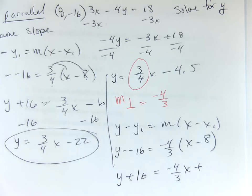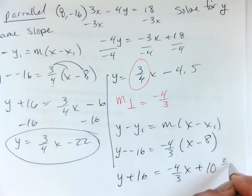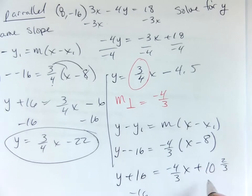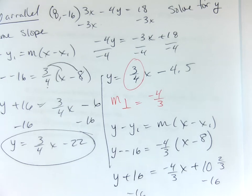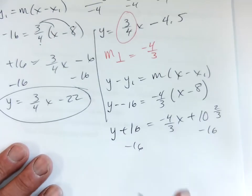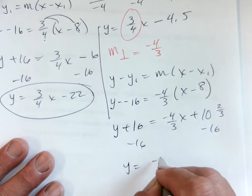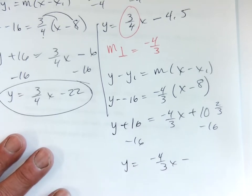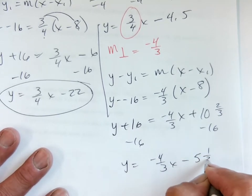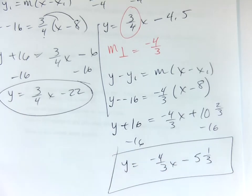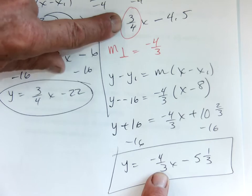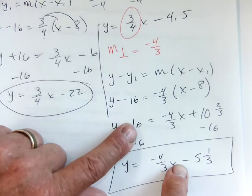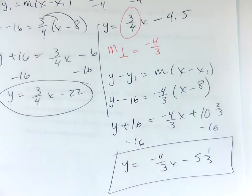y plus 16 equals negative 4 thirds x plus, let's see, 24 divided by 3, right? 32. 32 divided by 3. 33, hold on. 32 divided by 3. 33, 10 and 2 thirds, minus 16, minus 16. I get negative 5 and a third. So, y equals negative 4 thirds x minus 5 and 1 third. Okay? They are perpendicular because they have the opposite slopes. This one goes to the point negative 16, 8 because I forced it to, okay?